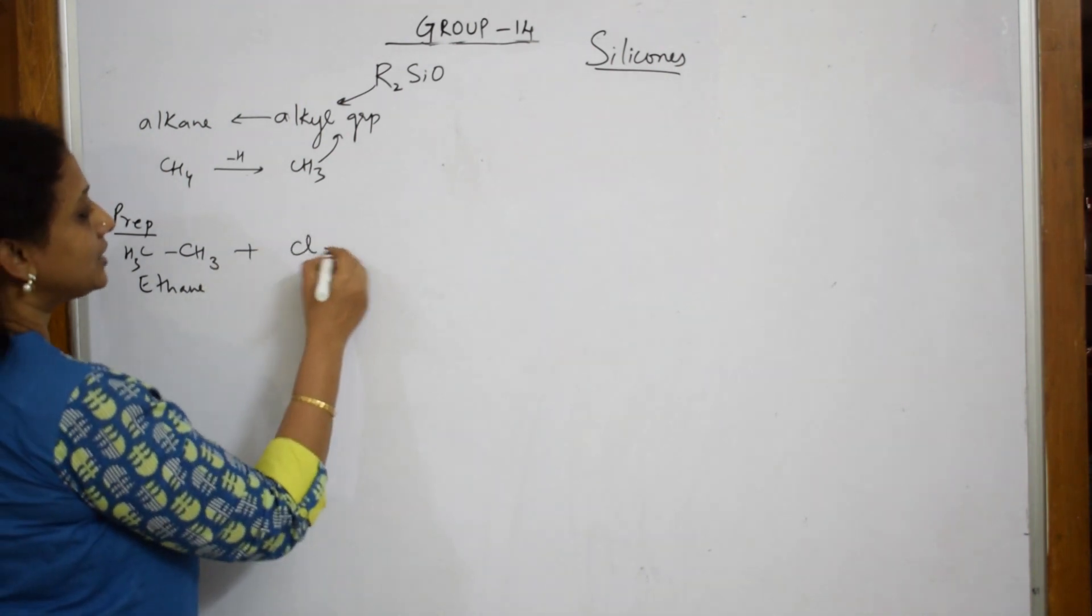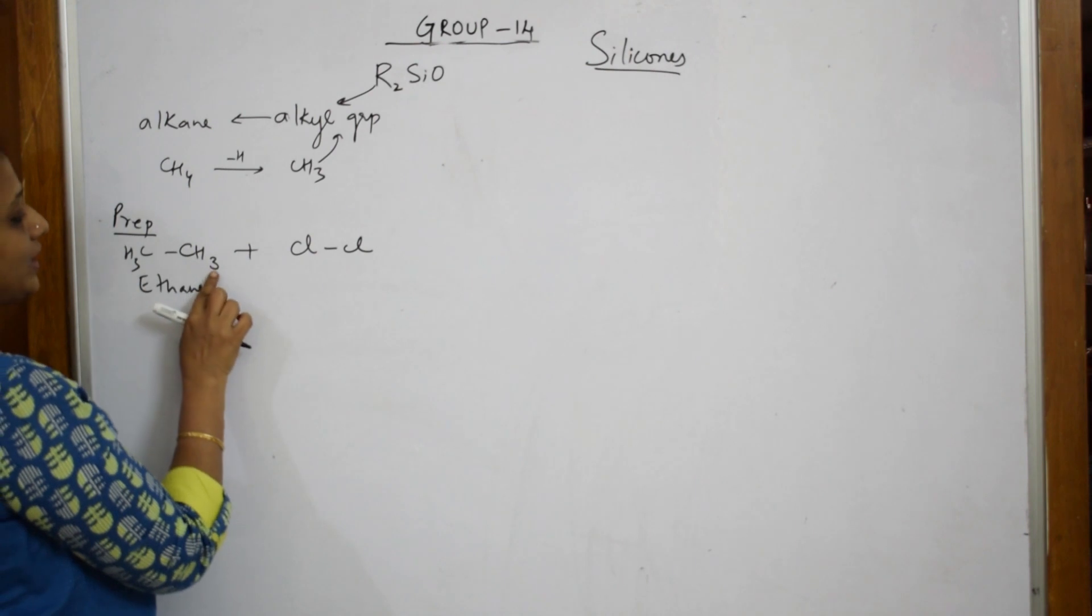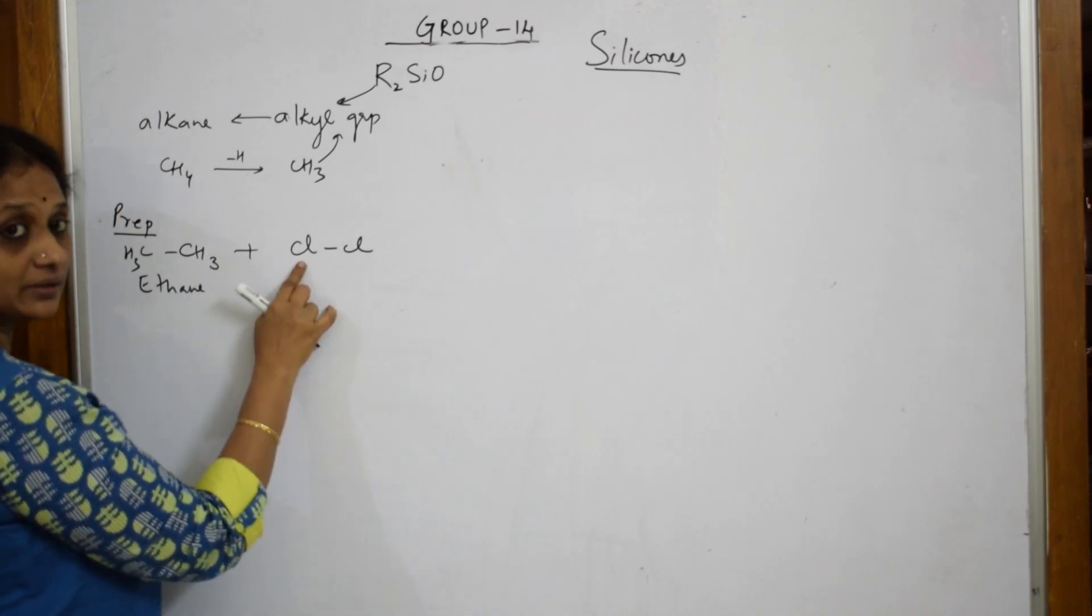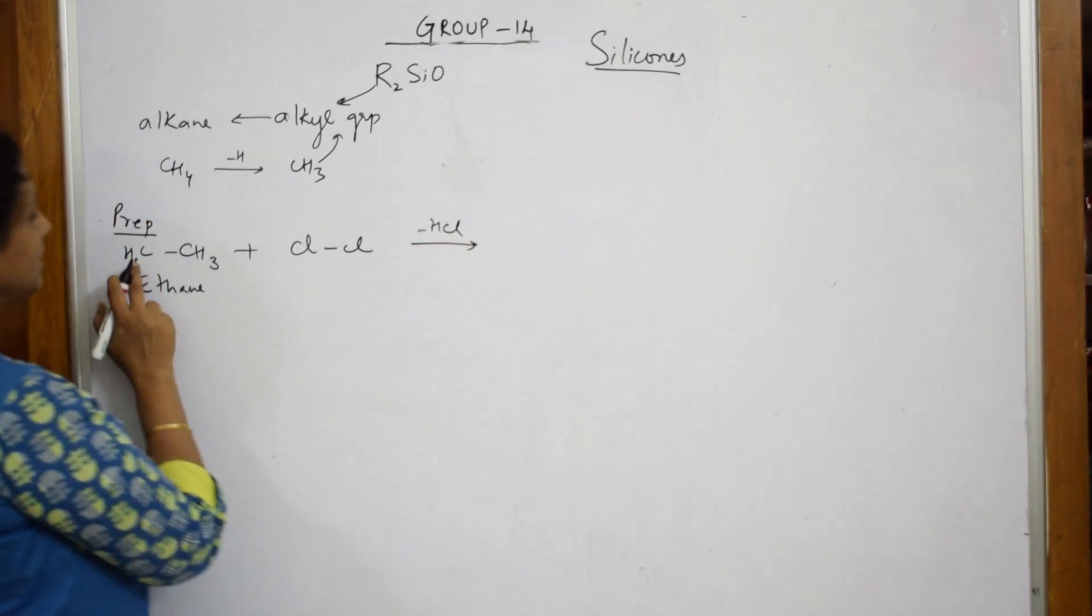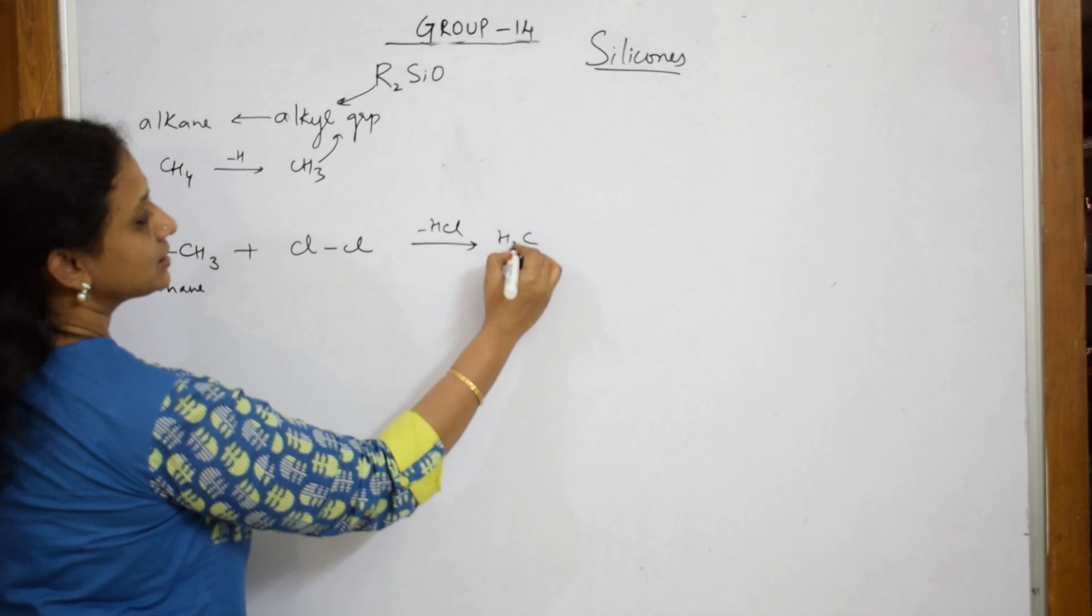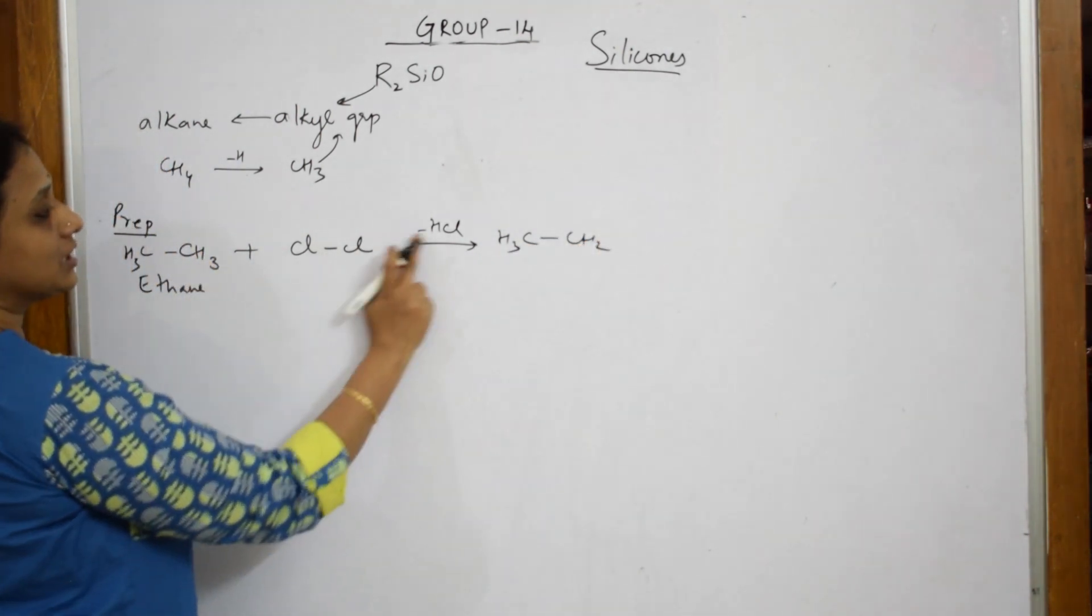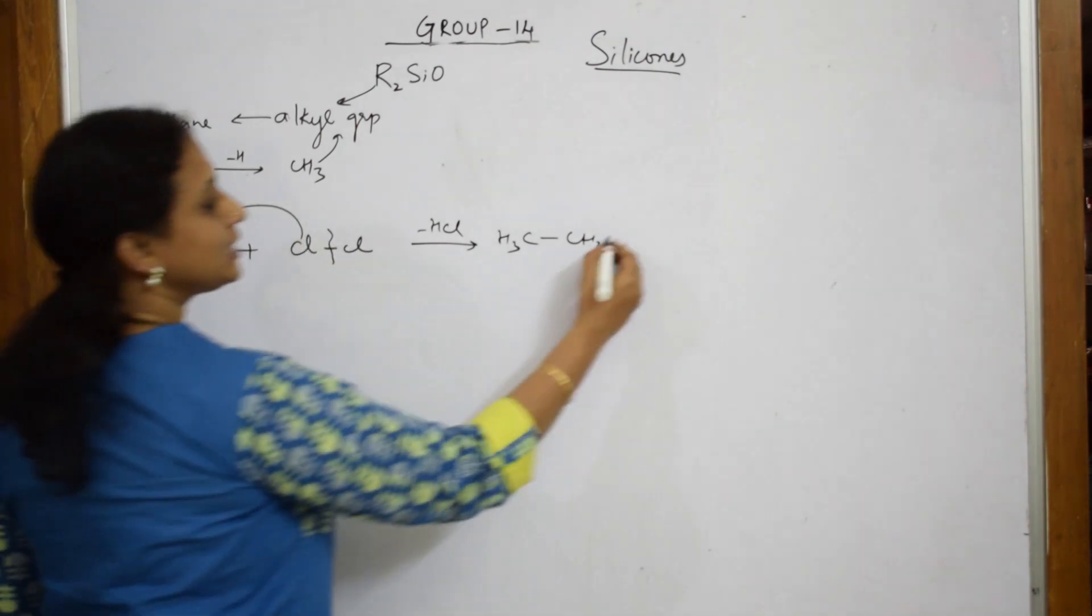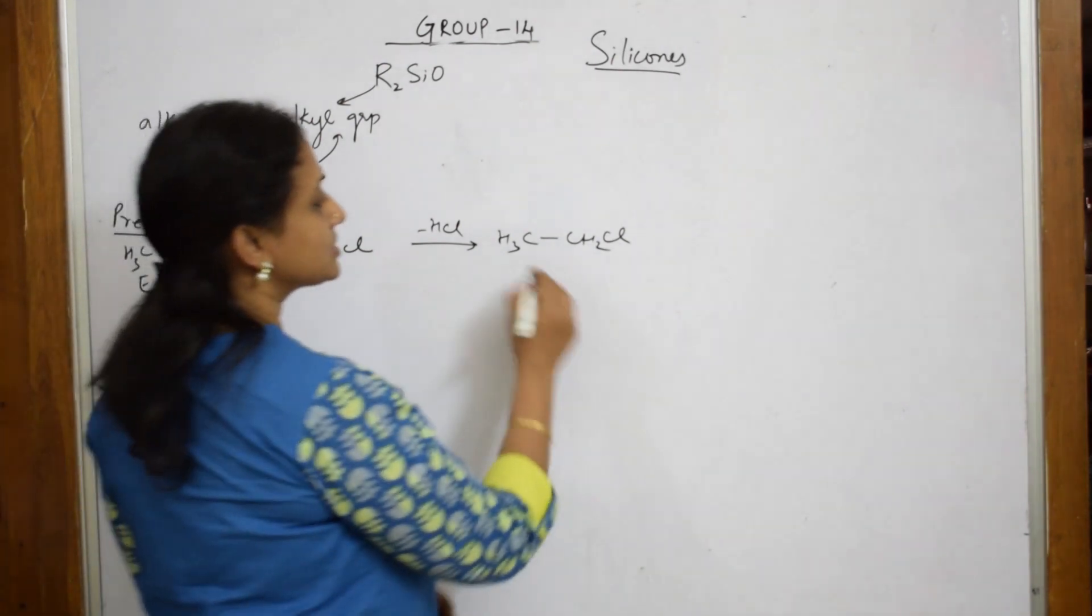Now, to this ethane, I am going to add chlorine. So, what happens? One H from here gets replaced with this chlorine. So, what do I get? I get minus HCl. Observe. I get CH3, correct? Here CH2. One hydrogen is already gone with this Cl. So, what is this? This is going to come and occupy Cl. Now, if I write it in a general way, how can I write this?